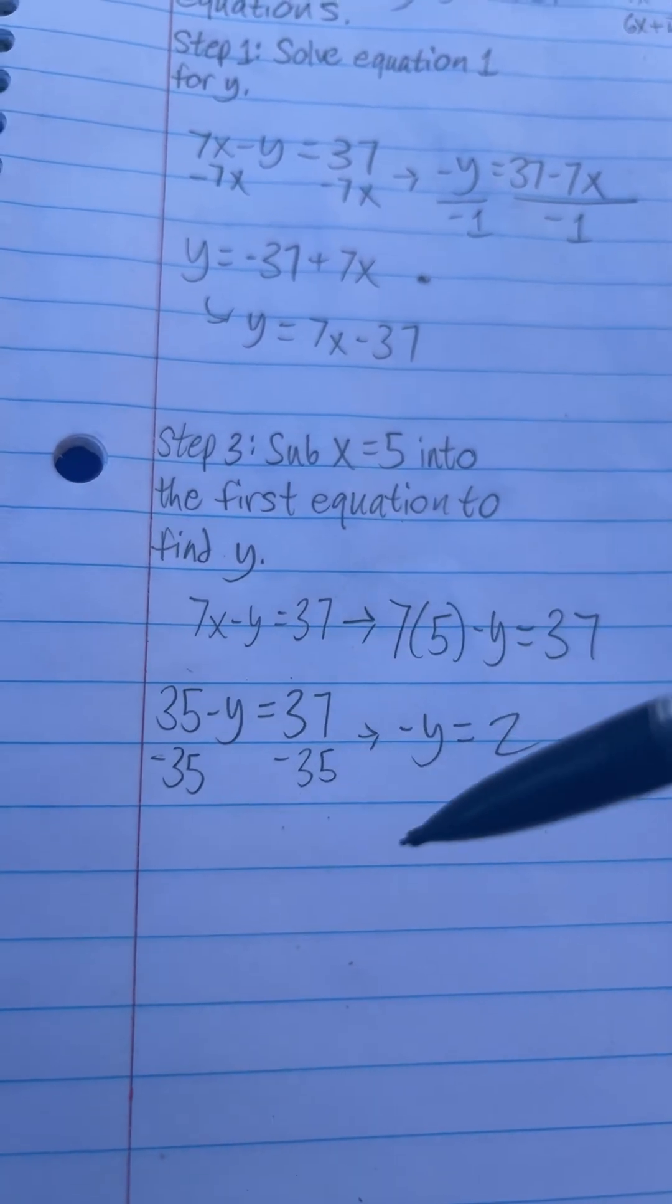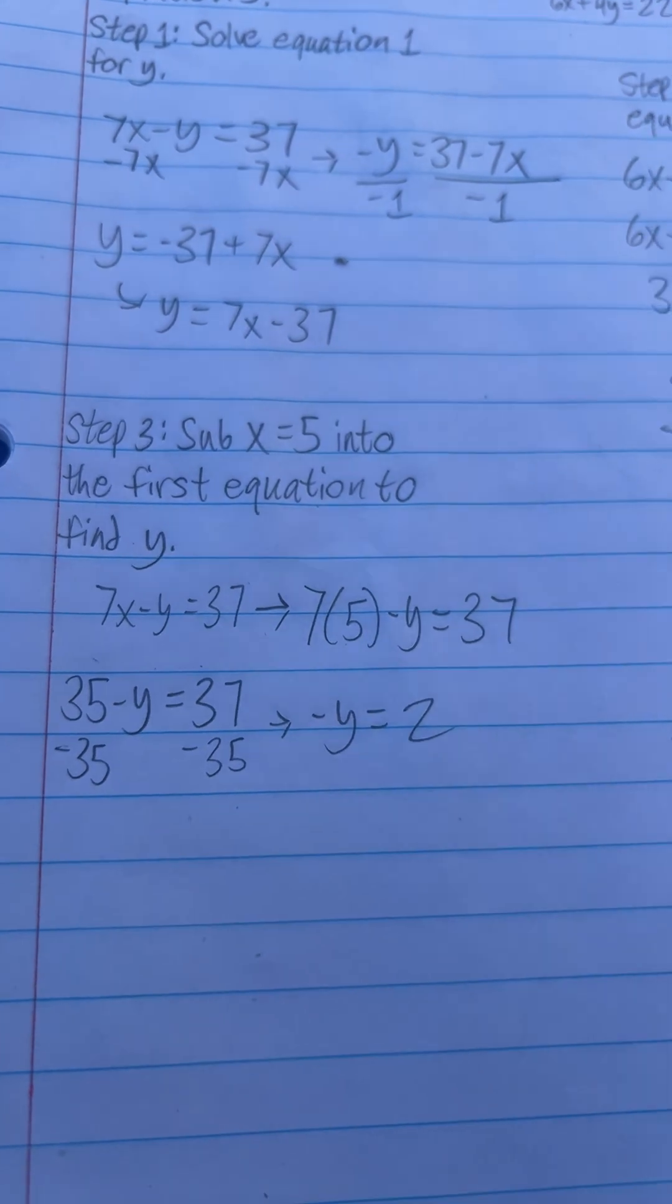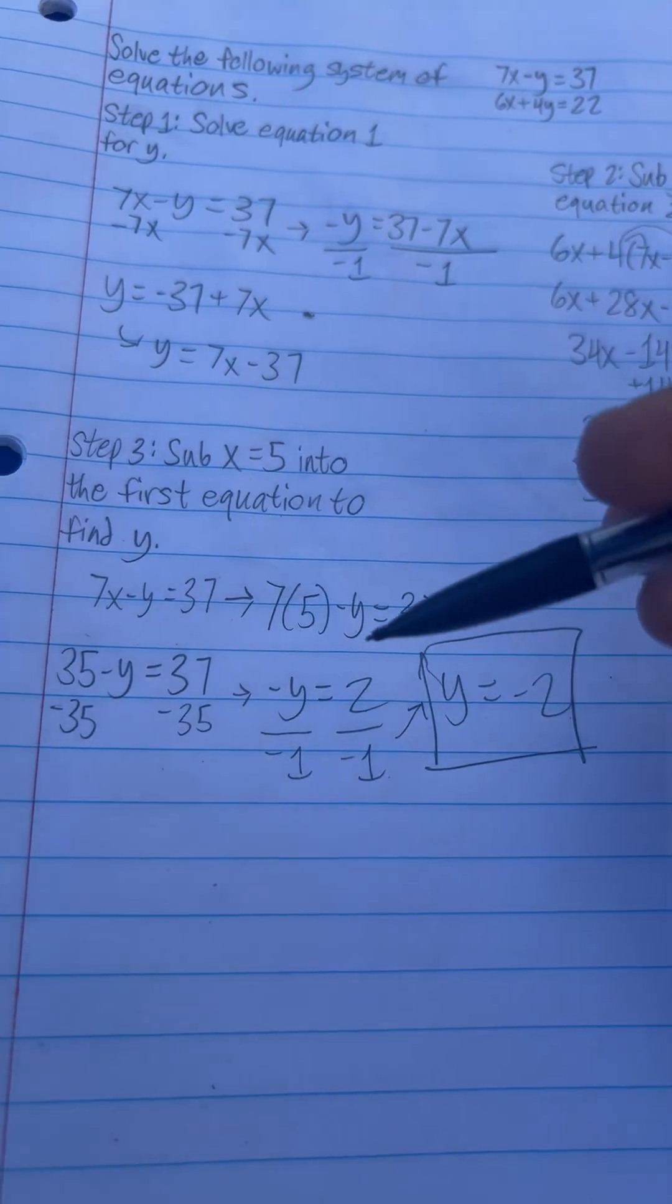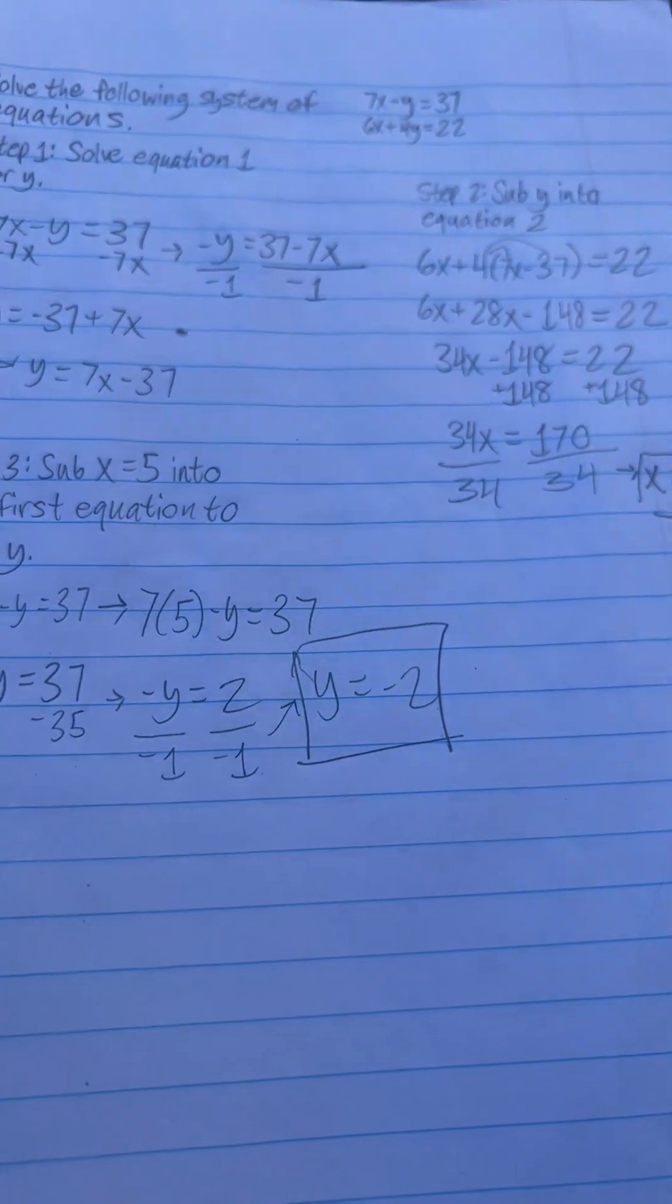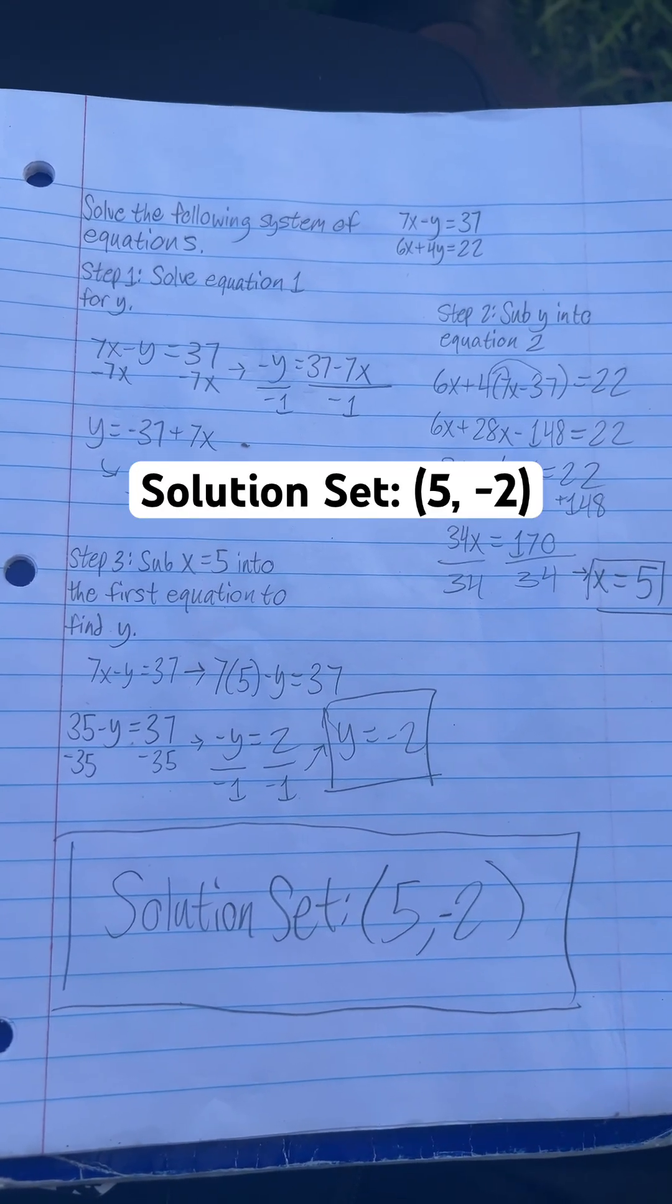Subtract both sides by negative 35 to get negative y equals 2. And you divide both sides by negative 1 to get y equals negative 2. So the solution set is 5 negative 2.